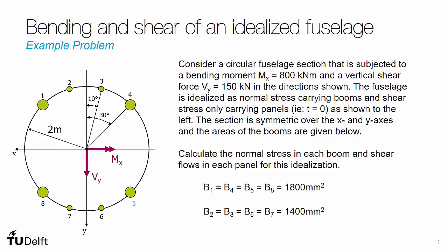In this example we are going to look at bending and shear of a simple idealized fuselage. This idealized fuselage consists of a circular cross-section with four stiffeners on the upper half, where booms 1 and 4 have an area of 1800 mm² and booms 2 and 3 have an area of 1400 mm². It's symmetric about the x-axis, so we have the same areas and stiffeners on the lower half as well. The radius is 2 meters, with a moment mx equal to 800 kN·m and a vertical shear force vy equal to 150 kN, both acting in the direction shown.